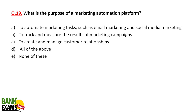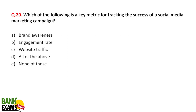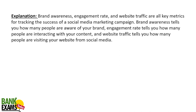The purpose of marketing automation platforms is to automate marketing tasks such as email marketing. Hootsuite is one such platform. They also track and measure results of marketing campaigns and create and manage customer relationships. Salesforce is another example. Key metrics for tracking the success of social media campaigns include brand awareness, engagement rate, and website traffic — all of these are correct.